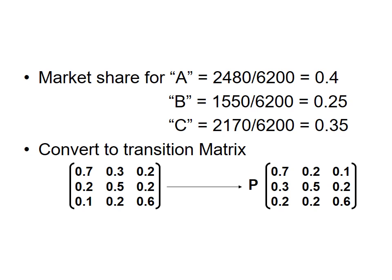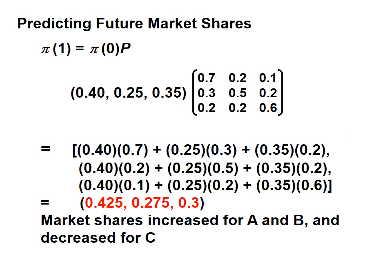The market share for A: 2,480 divided by 6,200 equals 0.40. For B it will be 0.25, and for C it will be 0.35. The summation of the three market shares must equal one. Using the transition matrix as shown, predicting future market shares: vector 1 equals vector 0 times B.